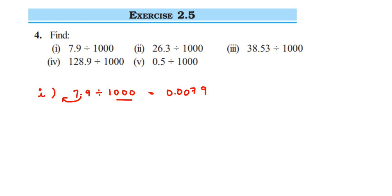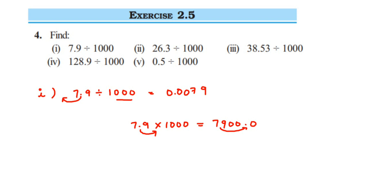The decimal point moves three places to the left because there are three zeros. If it were 100, it would move two places to the left. This is for division — in division the decimal moves to the left. Suppose you're multiplying 7.9 by 1000; the decimal would move three places to the right, giving 7900.0. So in multiplication it goes to the right, and in division it goes to the left.